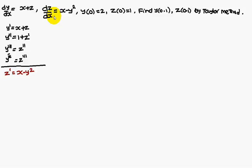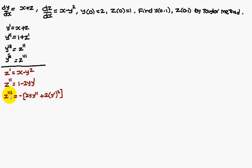Similarly, dz/dx — that means z dash — is equal to x minus y squared. The second differentiation is 1 minus 2y·y dash. The third differentiation, applying the uv method, gives 0 minus 2y·y double dash, plus y dash into 2y dash. Therefore: minus 2y·y double dash plus 2(y dash)².